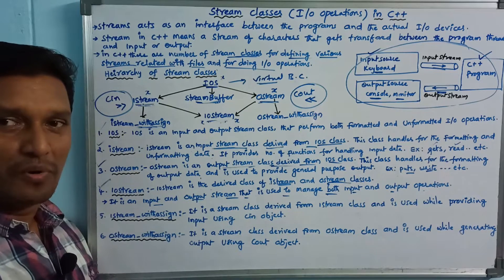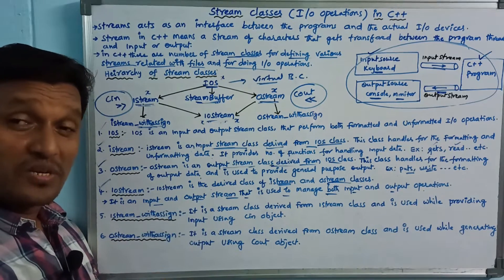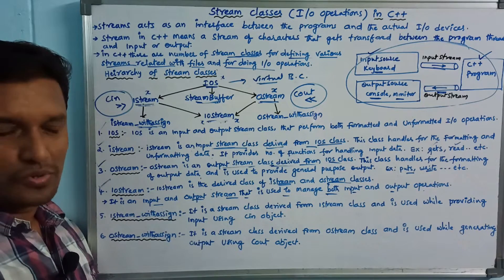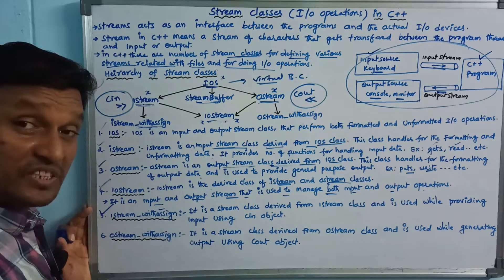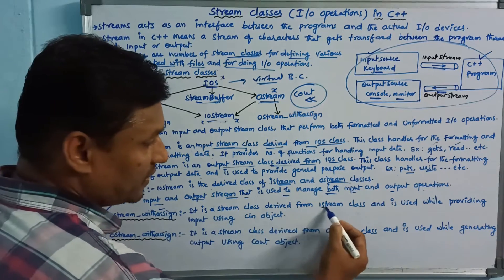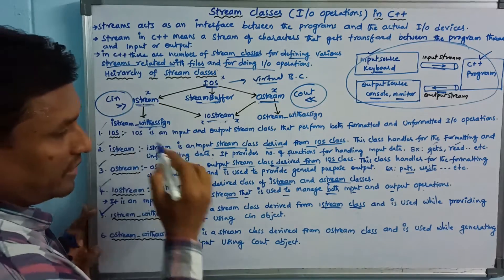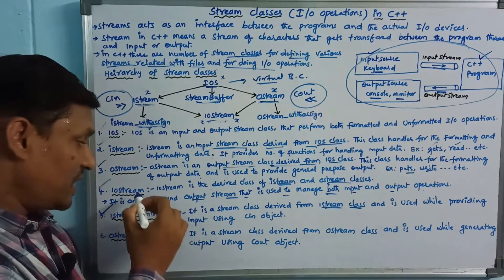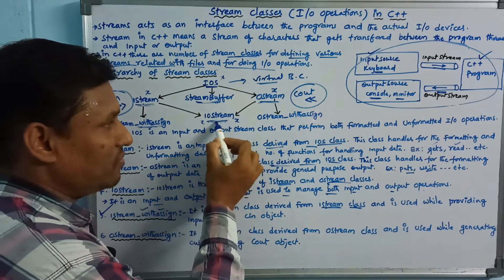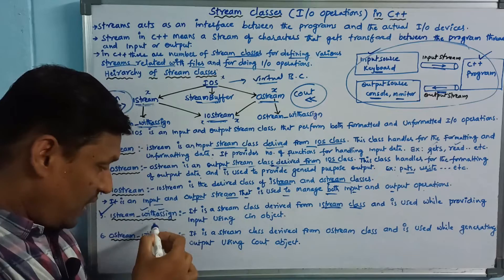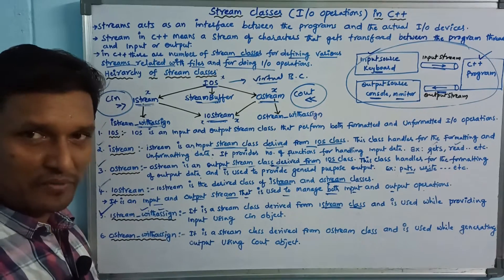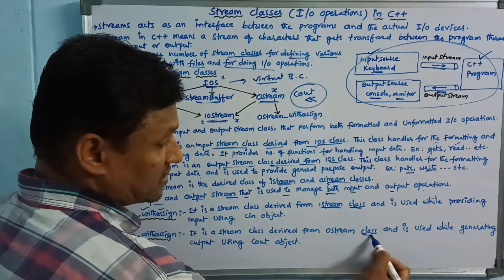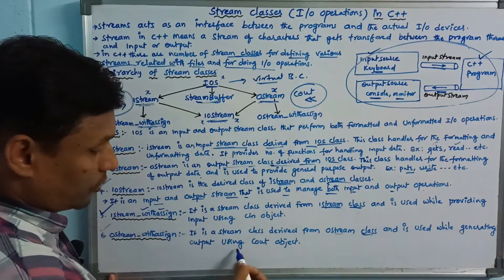When we include iostream.h, we get the iostream class functions and objects. Istream_withassign is an initialization stream class derived from istream class, used while providing input using the cin object. Ostream_withassign is a stream class derived from ostream class, used while generating output using the cout object.